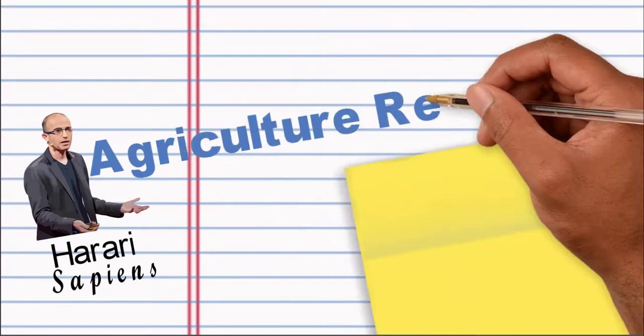What we're going to talk about here is part two in Harari's book Sapiens, and we're going to be looking at the Agricultural Revolution.